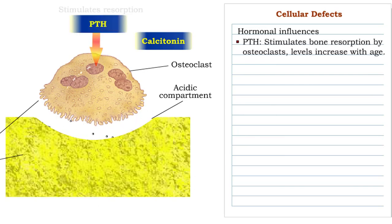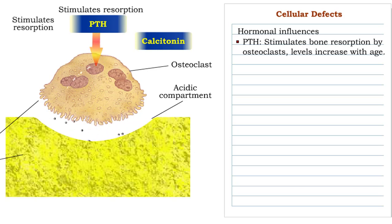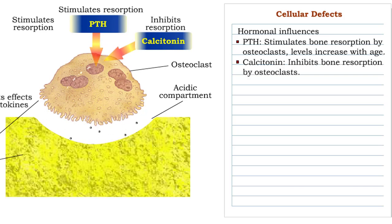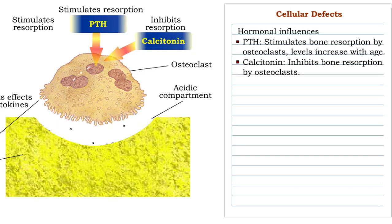Parathyroid hormone, or PTH, stimulates osteoclasts to resorb bone. PTH levels gradually increase with age, causing a proportional increase in bone removal. Conversely, the hormone calcitonin inhibits osteoclast activity. Synthetic calcitonin can be administered to decrease resorption and bone loss.